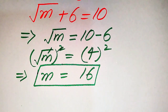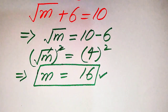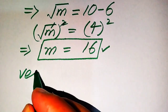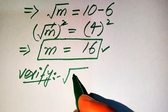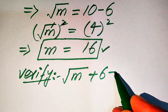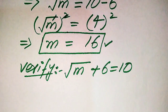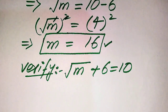We get only one root of the given equation, that is m equals 16. Now in the next step we need to verify whether this root is a solution or an extraneous root. For verification we copy down the given equation: square root of m plus 6 equals 10. The roots which satisfy the given equation are called the solution of that equation, and the roots which do not satisfy the given equation are called the extraneous root.